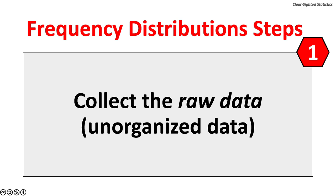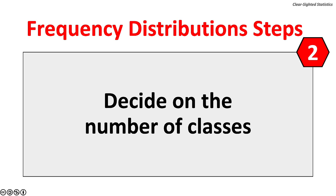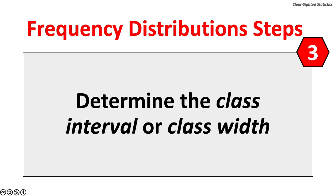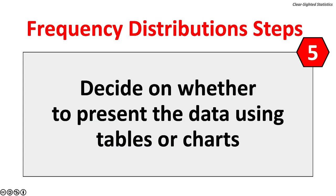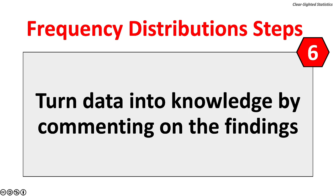Here are the steps to construct a frequency distribution. First, collect the raw data — unorganized or unprocessed data. Two, decide on the number of classes. Three, determine the class interval or class width. Four, select a lower limit for the first class, find the lower and upper limits for each class, and find the class midpoints. Then complete the frequency distributions. Five, decide whether to present the data using tables or charts. Six, turn data into knowledge by commenting on the findings.